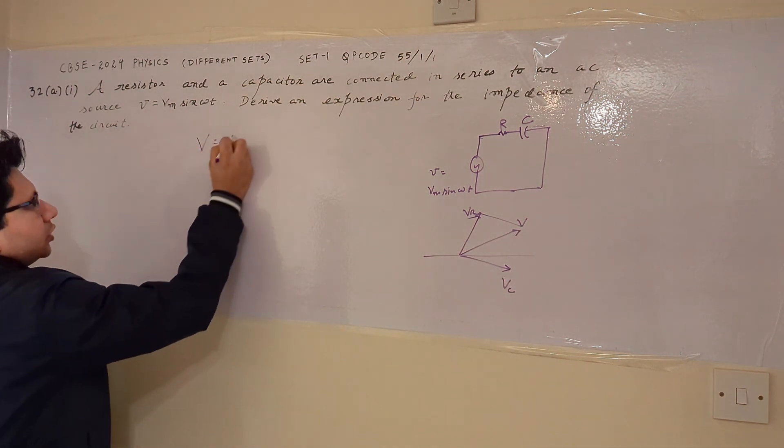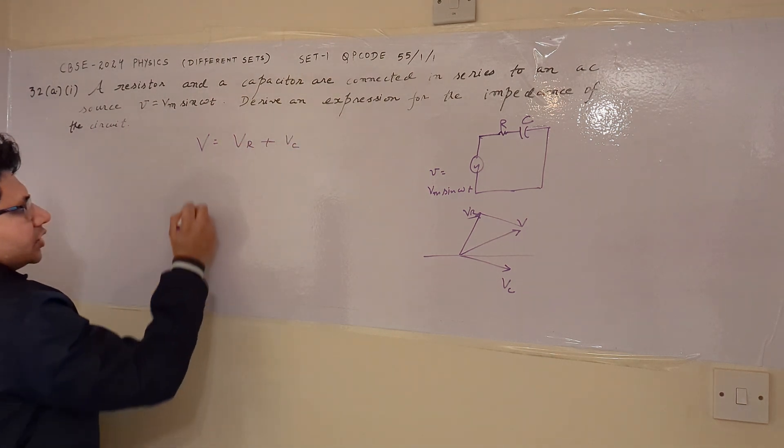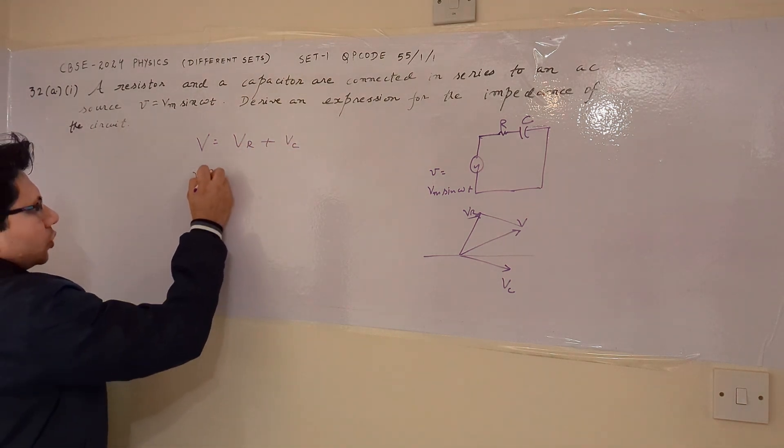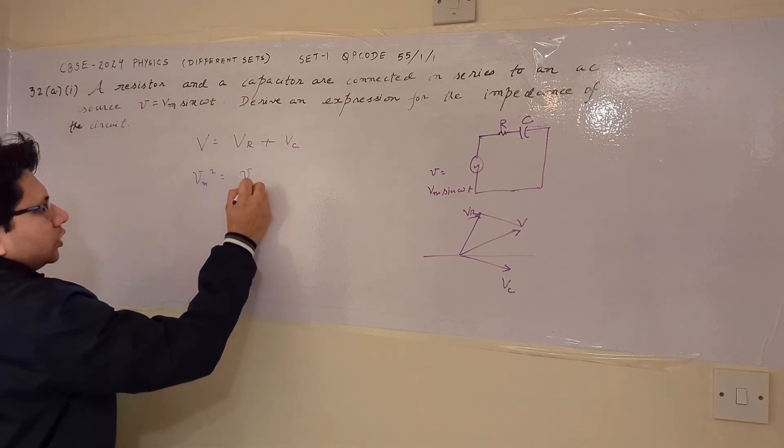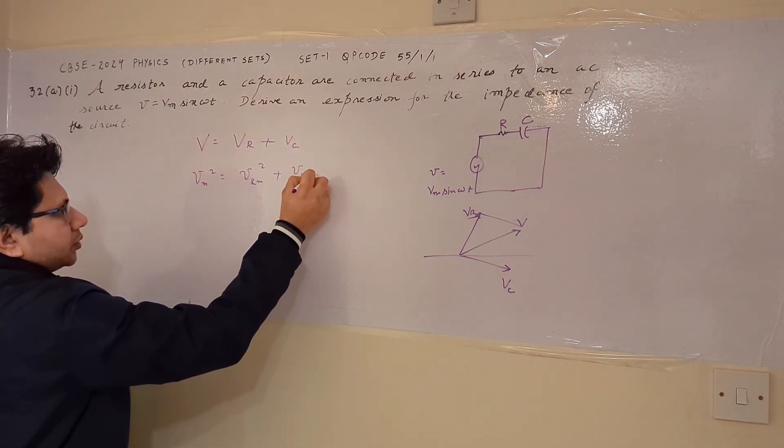we can say that V equals to Vr plus Vc or we can say that Vm square is equal to Vrm square plus Vcm square.